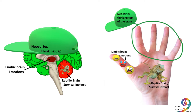The next part of the brain is the limbic brain. This is the seat of our emotions and is represented by the thumb. And then we have the neocortex, or the thinking cap of the brain, and this is represented by the fingers.